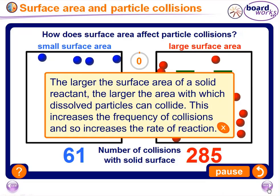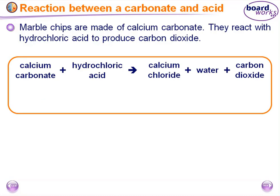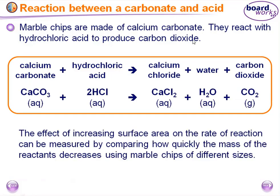Now let's investigate experimentally the effect of surface area on the rate of reaction. This investigation uses the reaction between calcium carbonate and hydrochloric acid. Marble chips made of calcium carbonate react with hydrochloric acid to produce carbon dioxide: CaCO₃ + HCl → CaCl₂ + H₂O + CO₂. Since carbon dioxide is a heavy gas, its production causes the mass of the reaction mixture to decrease.